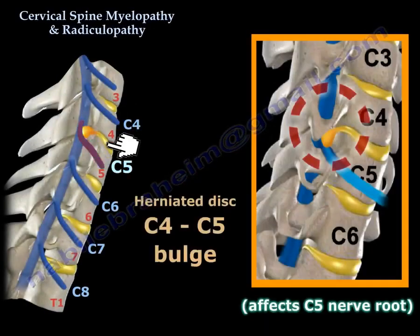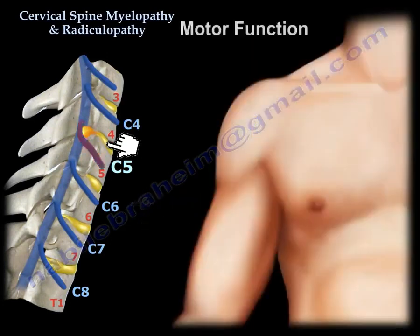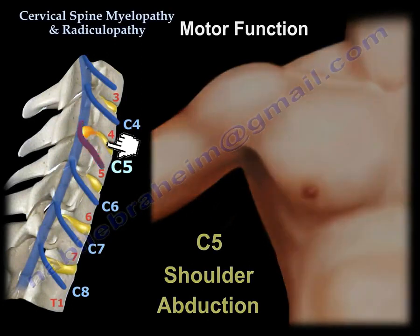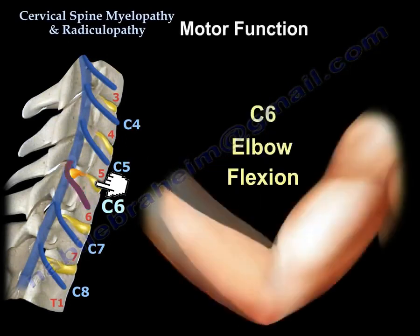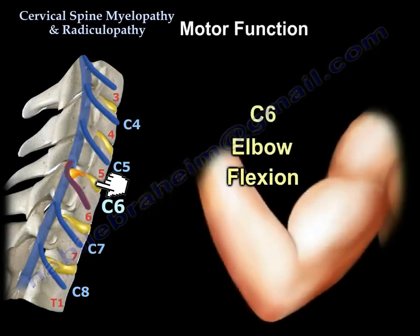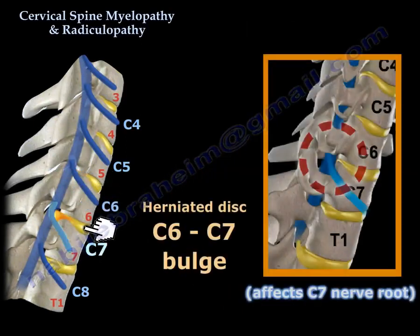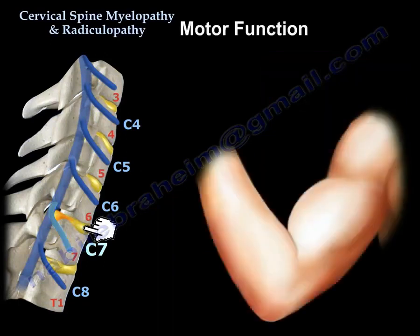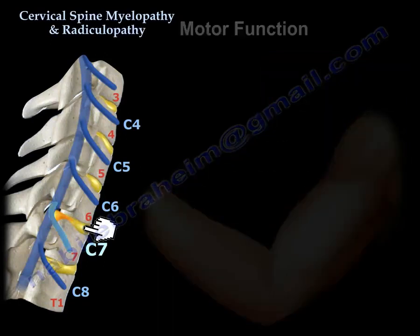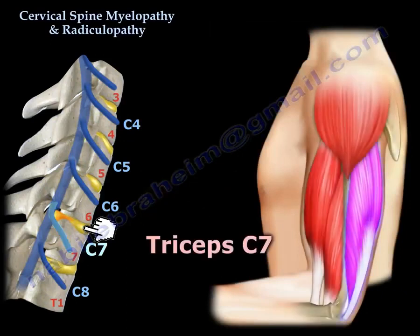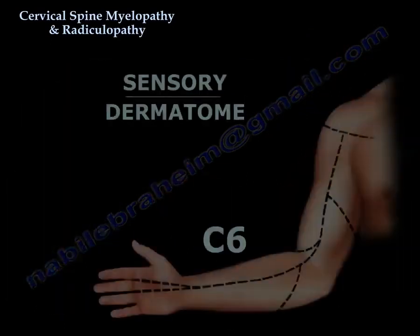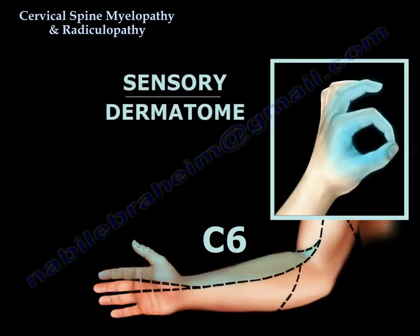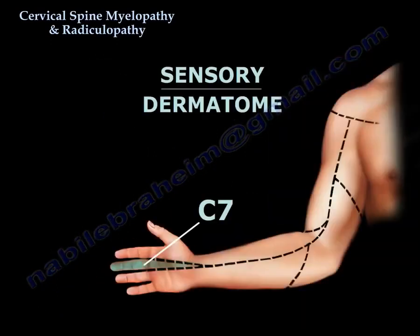You can add shoulder abduction — C5. Elbow flexion is C6. And the triceps reflex is C7. The dermatomes: C6 corresponds to the thumb side (the shape of 6), C7 is the middle finger, and the fifth finger is C8.